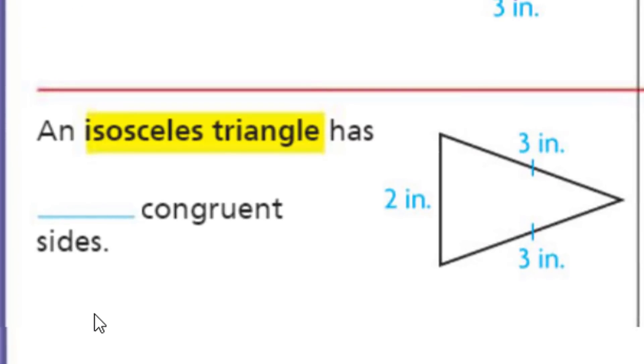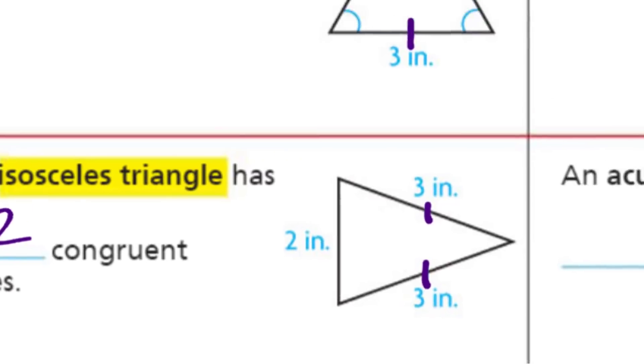An isosceles triangle has how many congruent sides? Well, look, it has this, indicating that that's congruent with that one over there. I'm going to say two. Two on blue.